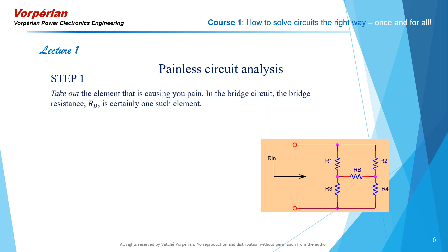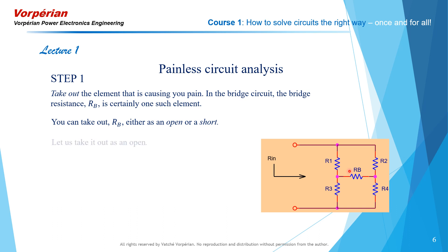Step one: take out the element that is causing you pain. In this bridge circuit, the bridge resistance RB is certainly one such element — this guy here. So why don't you take it out? You can take it out as an open or a short. How about if we take it out as an open circuit? There it goes.